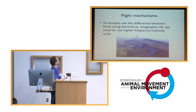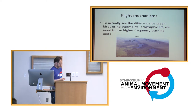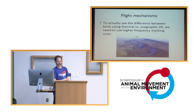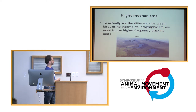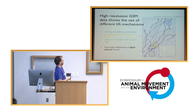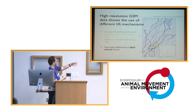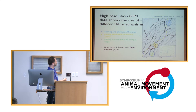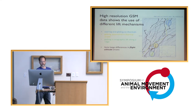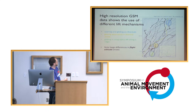To actually see the difference between birds using thermal and orographic lift, we really need higher-frequency data. We're on a small limb using coarser-scale data to get at this mechanistic information. This data is from CellTrack Tech GSM transmitters — a paper published in Biology Letters. These are 30-second data: a bird following a ridge at low altitude, a bird going downwind at very high altitude probably in a thermal street, and another track where a bird is crossing a valley, gaining altitude and gliding.